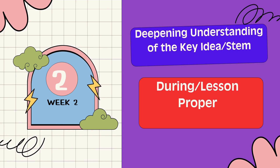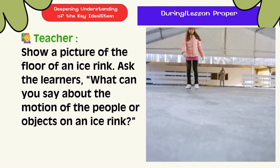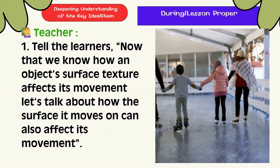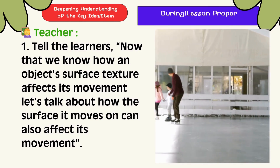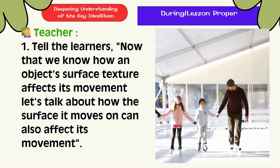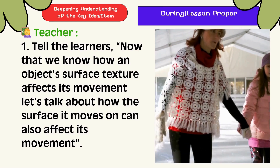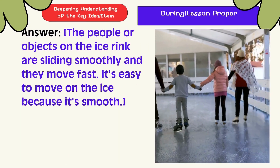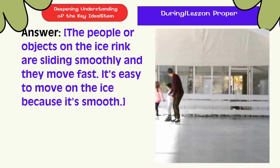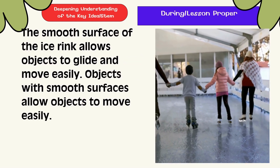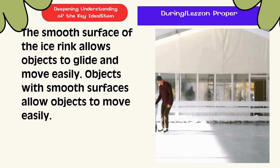Question 6: What can you say about the motion of people or objects on an ice rink? Now that we know how an object's surface texture affects its movement, let's talk about how the surface it moves on can also affect its movement. People or objects on ice rinks are sliding smoothly and they move fast. It's easy to move on ice because it's smooth. The smooth surface of an ice rink allows objects to glide and move easily.